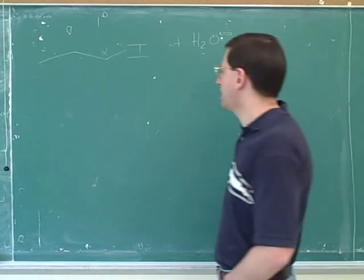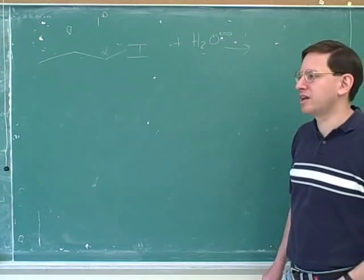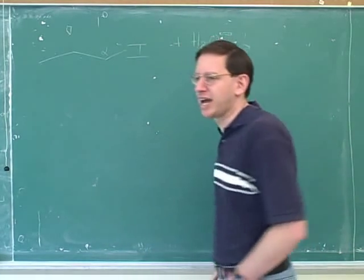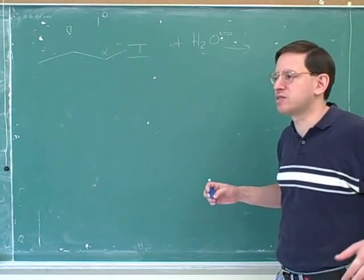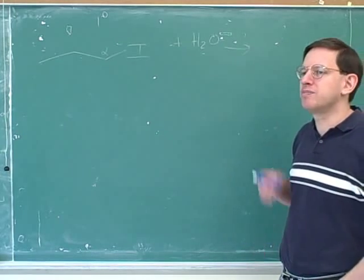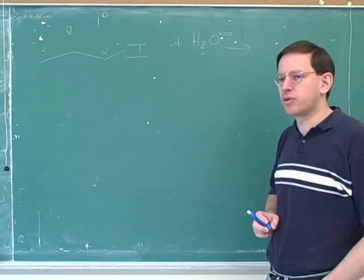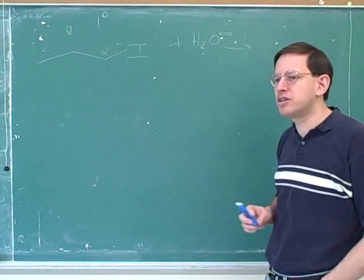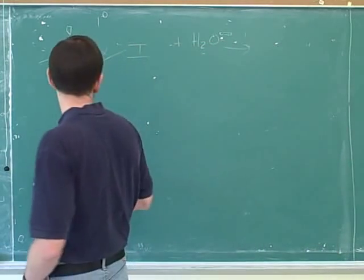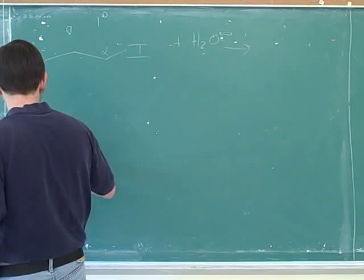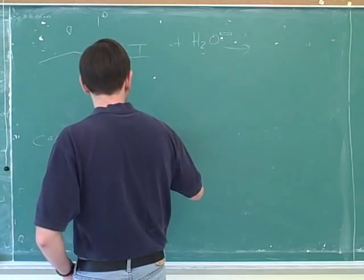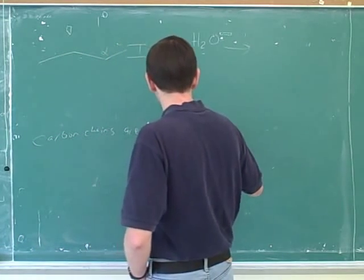Now we have to ask: how can we stabilize the carbocation? Would we do that by surrounding it with electron donors or electron withdrawers? Electron donors — because if you're positive, you can be stabilized if there are people around you to donate electrons to you. The next step in the logic is: what are carbon chains? Are carbon chains electron donors or electron withdrawers? It turns out carbon chains are electron donors. That's a very important point for the whole rest of the course.